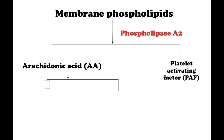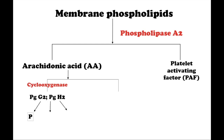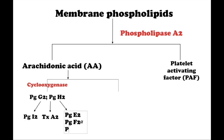The arachidonic acid cascade is undergone by two pathways: the prostaglandin pathway and the leukotriene pathway. The enzyme cyclooxygenase metabolizes arachidonic acid to prostaglandin G2 and prostaglandin H2, which in turn may be converted to various prostaglandins, such as prostacyclin, thromboxane A2, prostaglandin E2, F2-alpha, and D2.